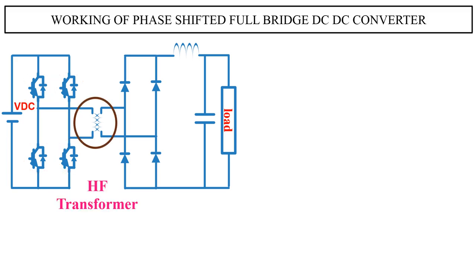This is the high frequency transformer used for isolation between input and output stage. It also provides the required voltage gain. An inductor is used to limit the output current ripple, and a capacitor is used as the filter to regulate the output voltage.